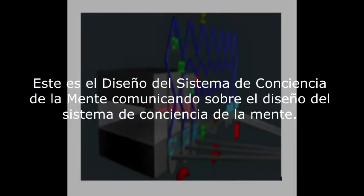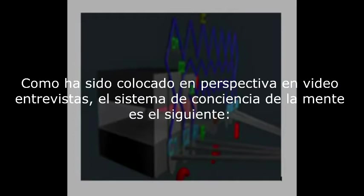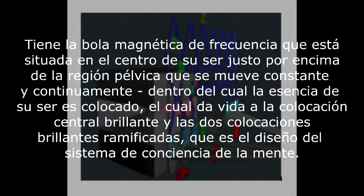This is the design of the mind consciousness system, communicating about the design of the mind consciousness system. As I've been placed into perspective in video interviews, the design looks as follows. You have the magnetic frequency ball, situated in the center of your being just above your pelvic region, which moves constantly and continuously, within which the essence of your being is placed, giving life to the center of being placement and the two being branch placements — which is the mind consciousness system design.